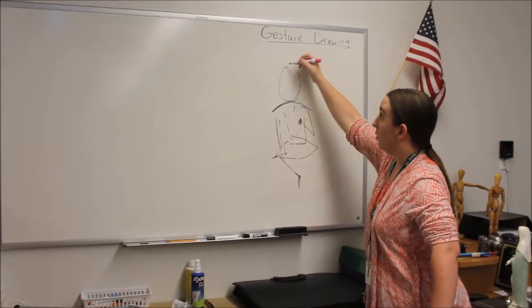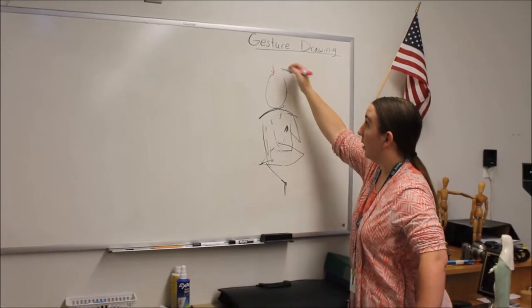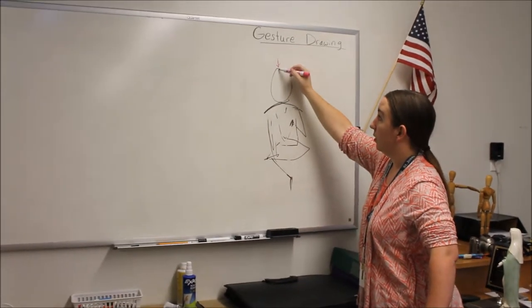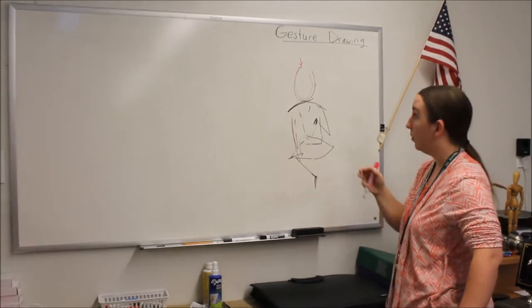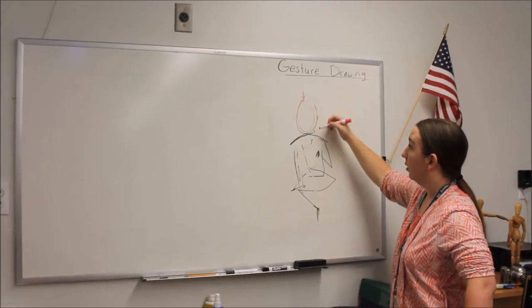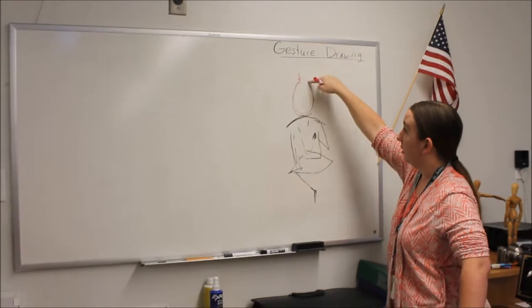What I did here was I started with his head. You can see this is my start of my line here. I just said, okay, here's his head. I didn't care about if it was a perfect circle or the perfect shape of it. I just wanted to get his head in there. Then I picked up my pen here.